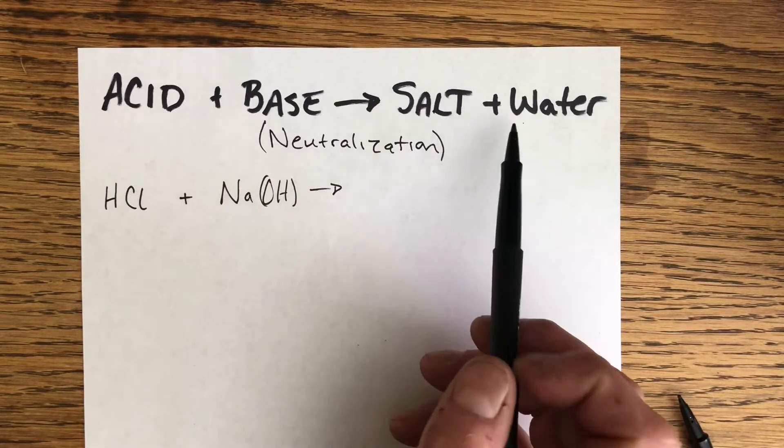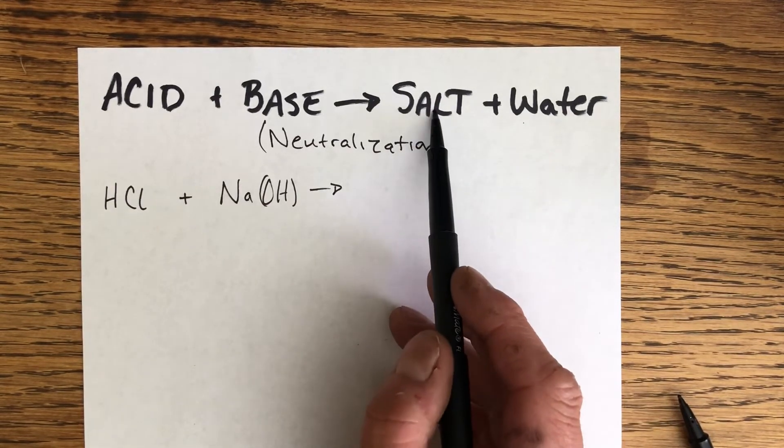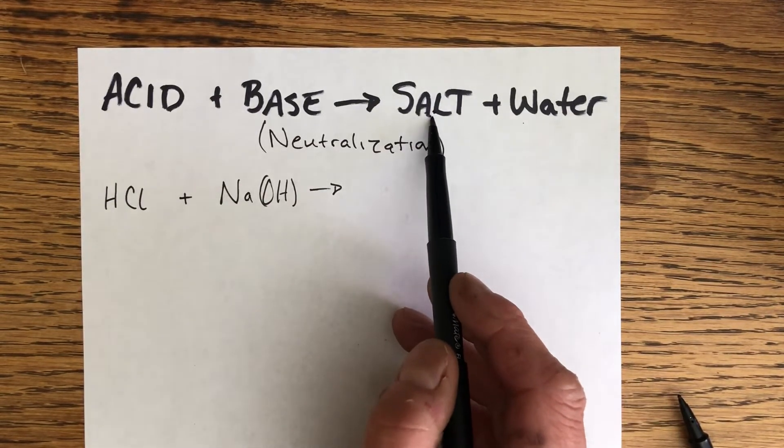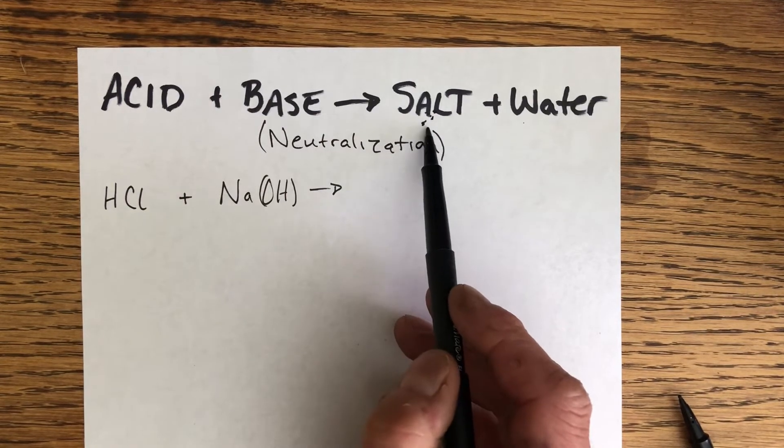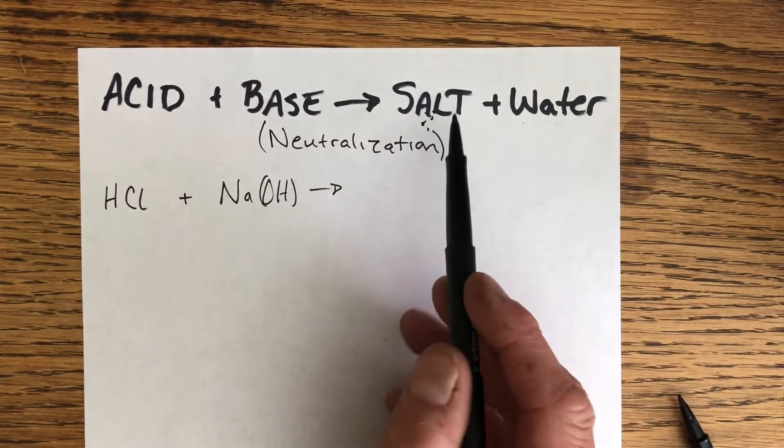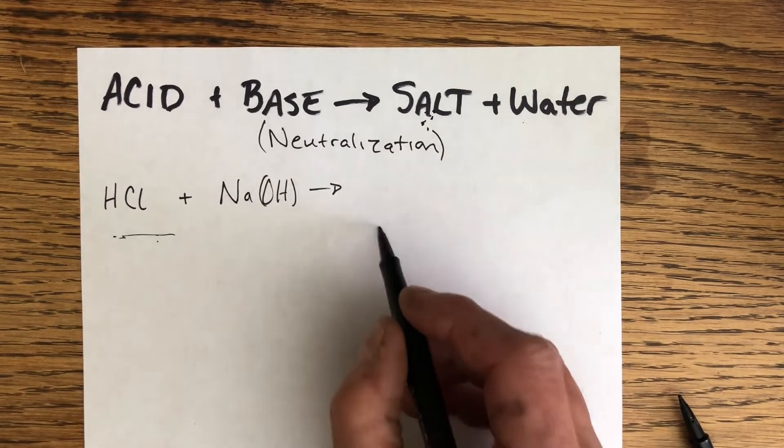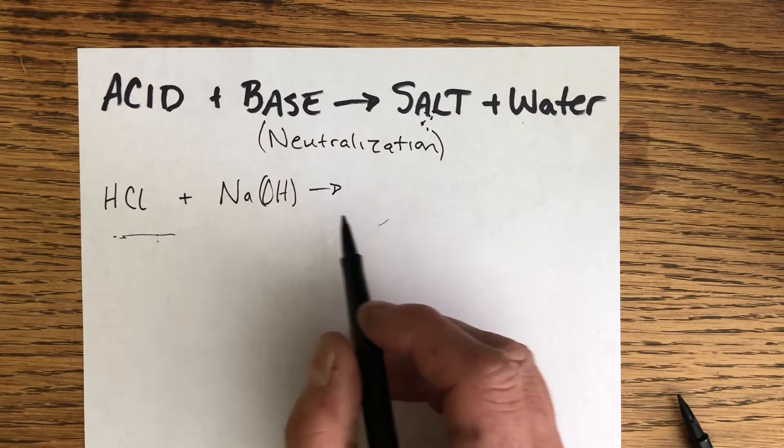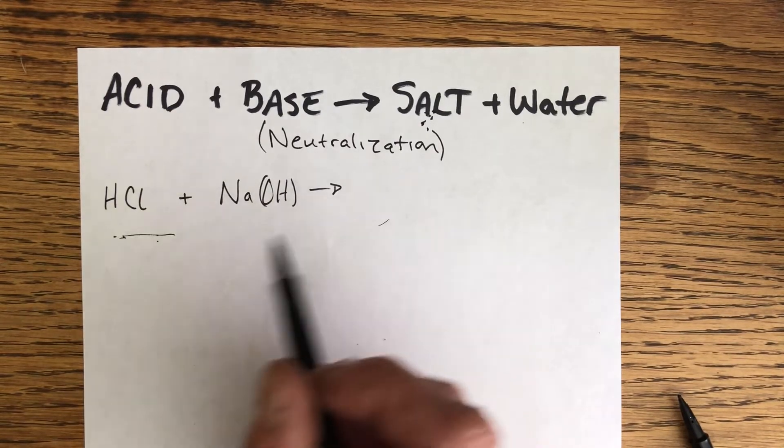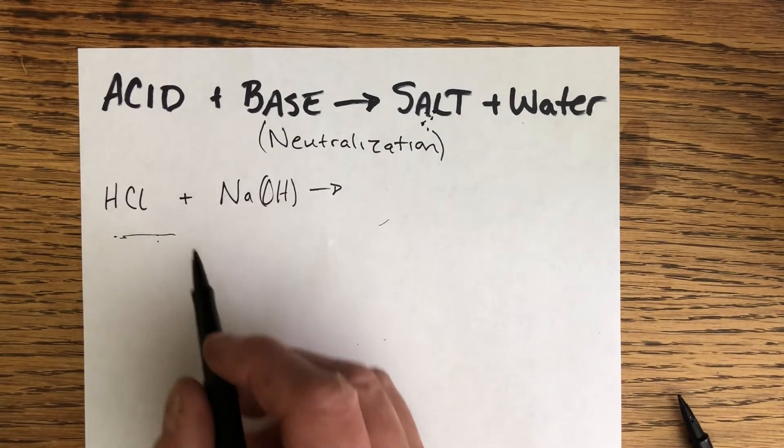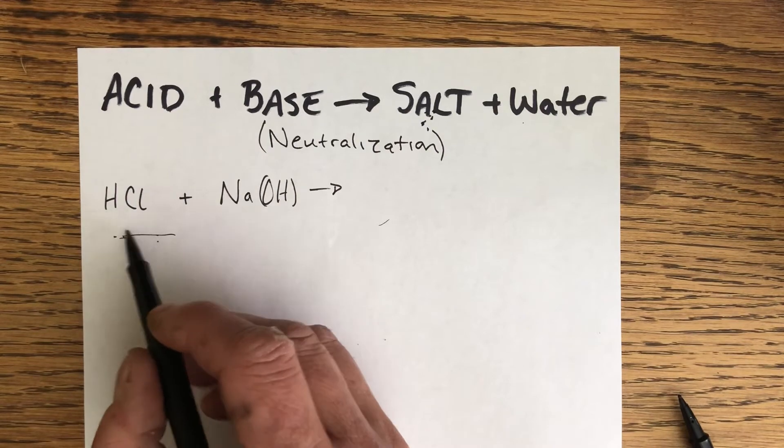The salt doesn't always have to be the salt that we're most familiar with, which is sodium chloride, but it can be. Here's an example of a neutralization reaction that does produce sodium chloride. That's because in these neutralization reactions, they are double replacement, meaning that the positive ions are going to switch partners.